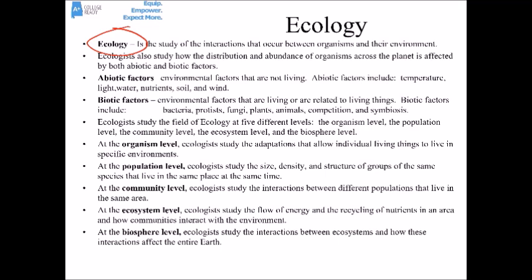Ecologists often study ecology at five different levels. First, at the organismal level, where they're looking at individual living things and the adaptations that allow them to live in a specific environment. Next, at the population level. A population is a group of the same species of organism living in the same place at the same time. In population ecology, ecologists study size, density, and the structure of populations.